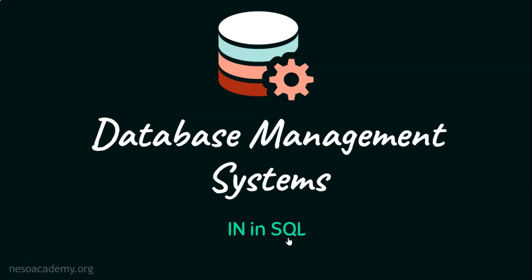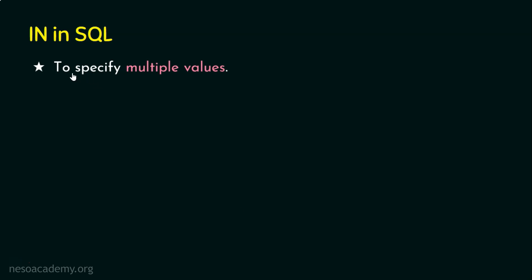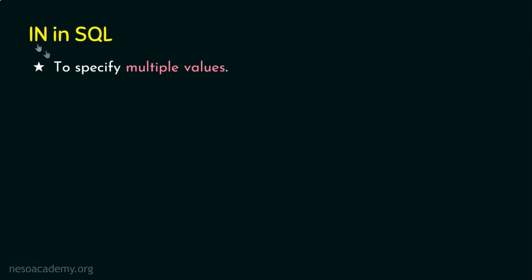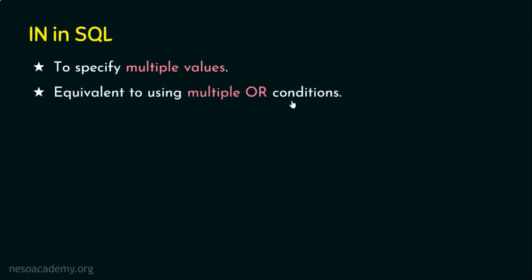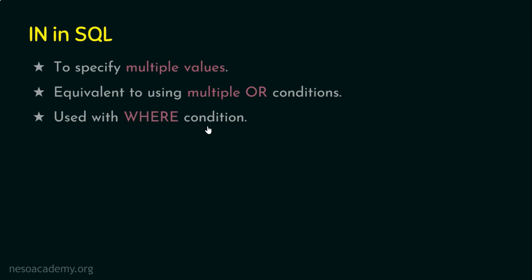Why do we need this keyword IN? This keyword is used to specify multiple values. For example, if we want to retrieve records using SELECT and filter with WHERE — say, where city is either Chennai or Mumbai — we specify city equal to Chennai OR city equal to Mumbai. When we have multiple values in the condition, we can use the keyword IN, which is equivalent to using multiple OR conditions, and it is used with the WHERE clause.